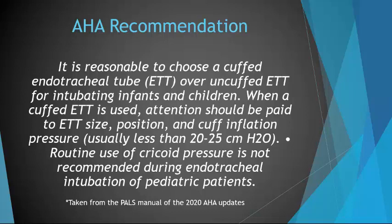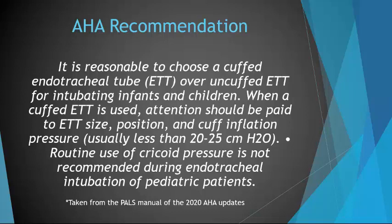The appropriate depth for endotracheal intubation in a pediatric patient is 2 to 3 centimeters beyond the vocal cords. Be sure to record the mark at the corner of the child's mouth, document this, and keep double-checking tube placement.